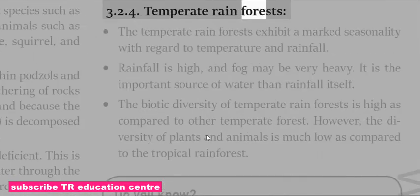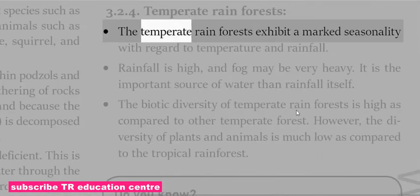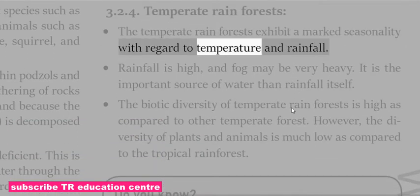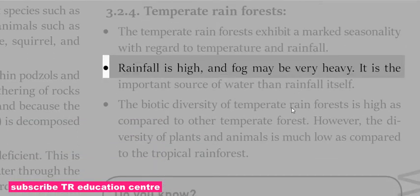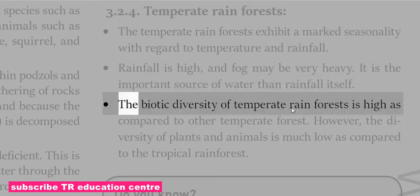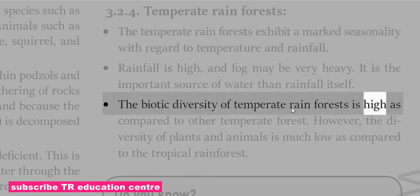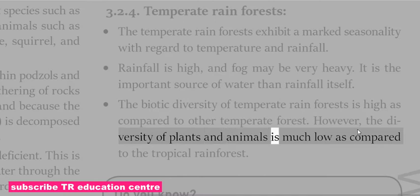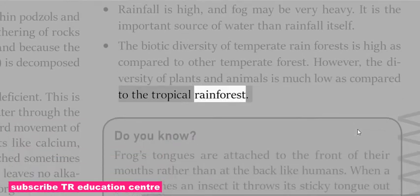The temperate rainforests exhibit a marked seasonality with regard to temperature and rainfall. Rainfall is high, and fog may be very heavy — an important source of water beyond rainfall itself. The biotic diversity of temperate rainforests is high compared to other temperate forests; however, the diversity of plants and animals is much lower than that of tropical rainforests.